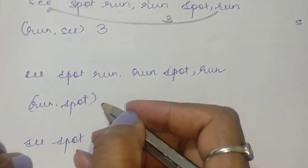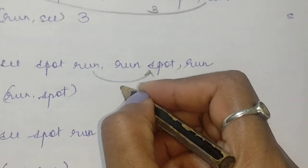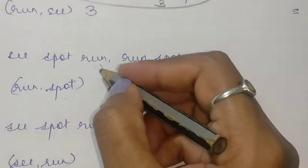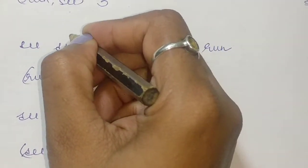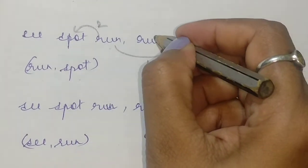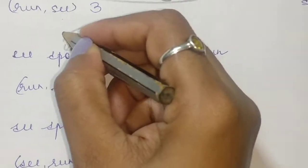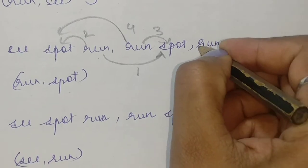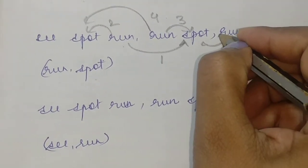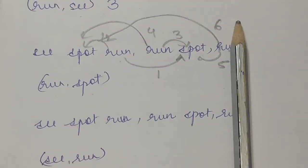Moving on, we are going to look at run and spot — this is a bit tricky. First run and first spot is one, second spot is two. These two are together so this is three, run and spot. Then this run encounters that spot making four. Next, this run and spot gives five, and this run encountering this spot becomes six. So run and spot co-occur six times.